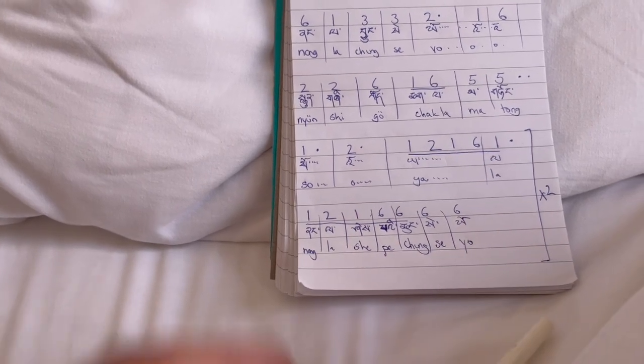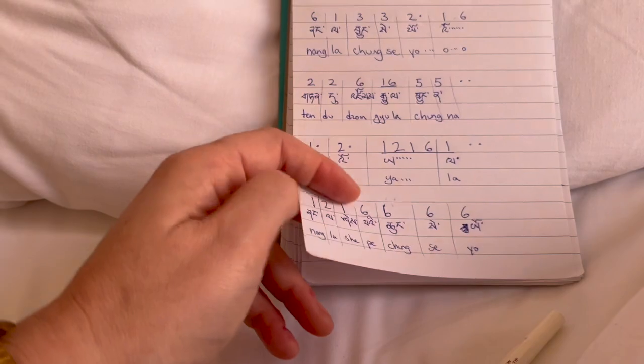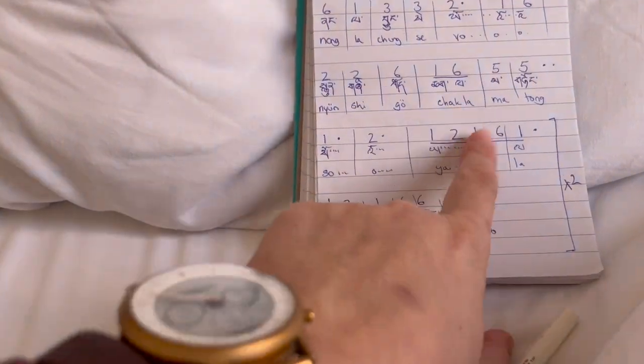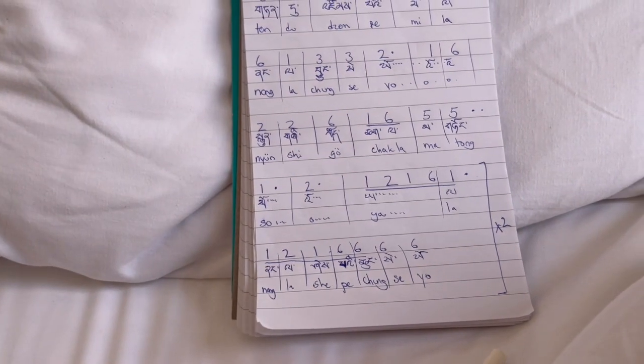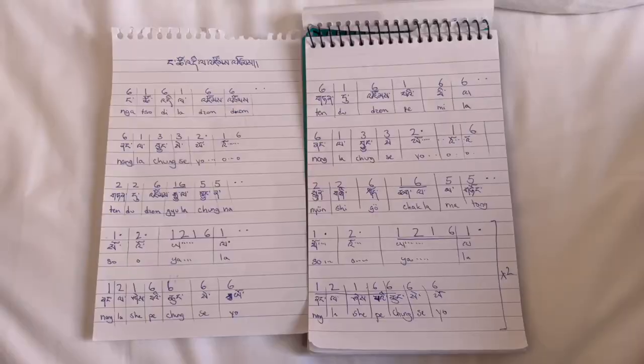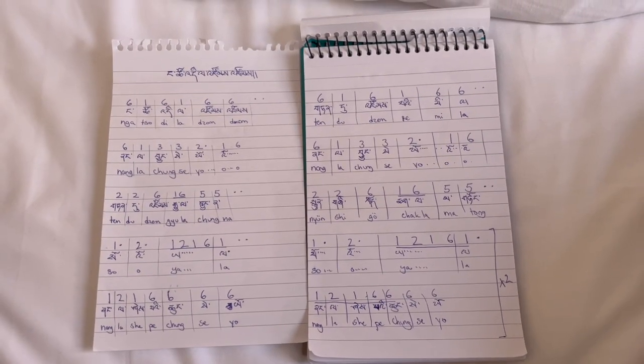The only confusing part here is we've got this one and six together with, again, just like before. So it's exactly the same as before. And that's the only potentially confusing bit. Now let's do the whole song from beginning to end.